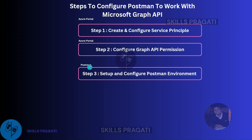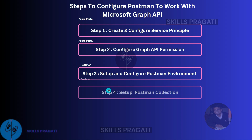After step 3, we will proceed to step 4 to set up the Postman collection. This step involves creating a collection in Postman to store and organize API requests. A collection can contain multiple requests, which can be grouped together logically.